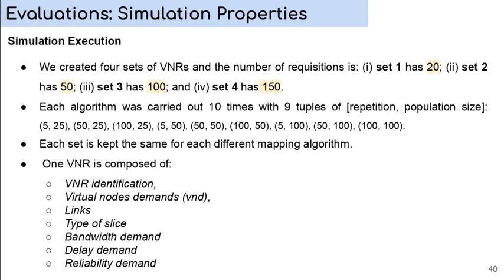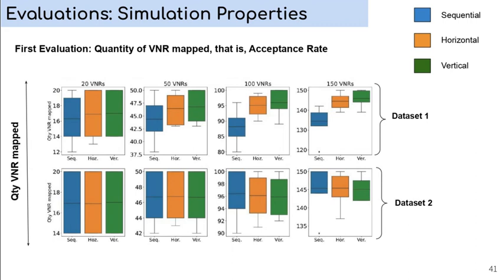In this slide, we can see the success average of the mapping of all algorithms using all tuples. Regarding the standard deviation, all algorithms obtained the same results. And this result shows that the parallelization process does not change the differential evolution behavior.